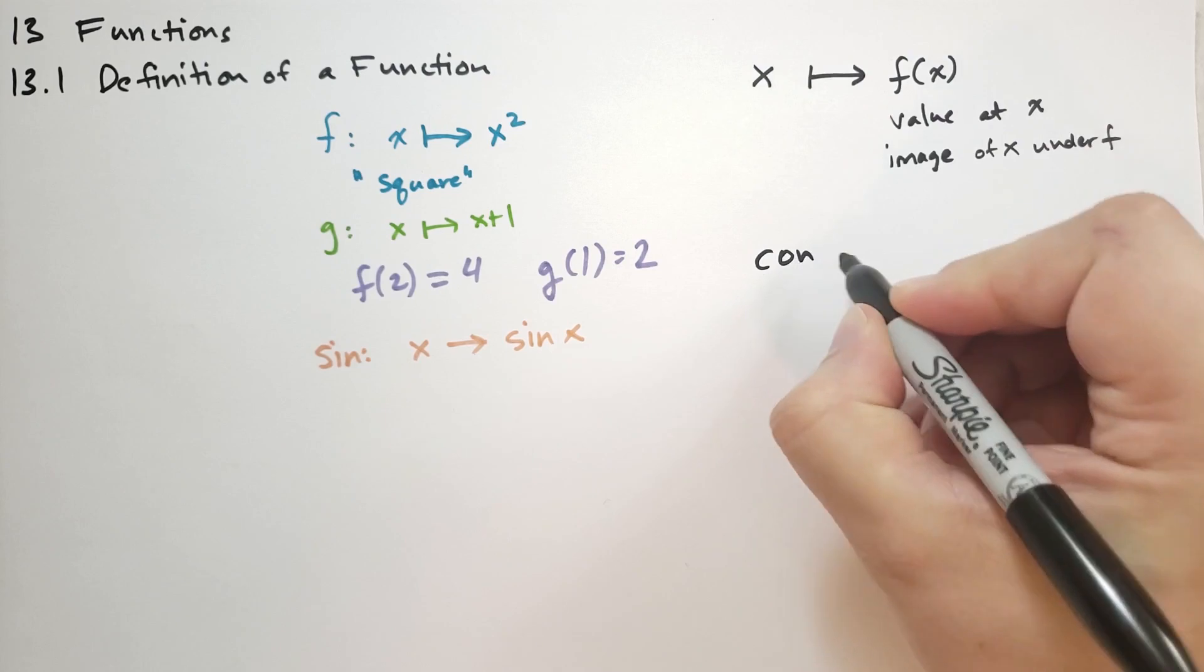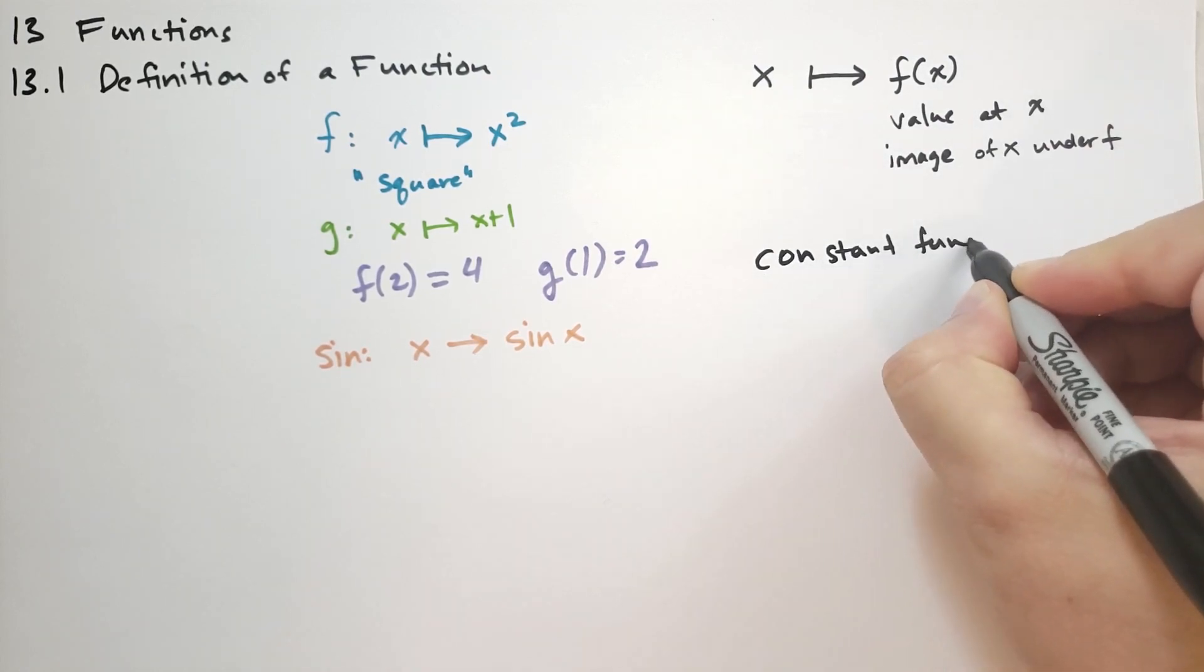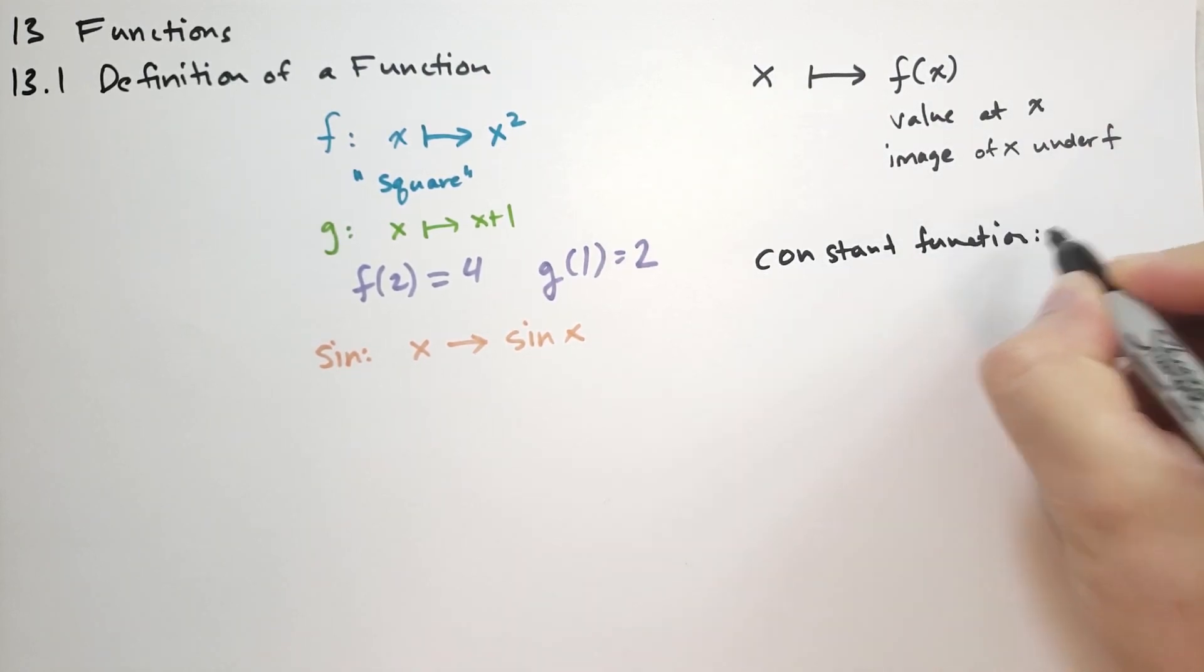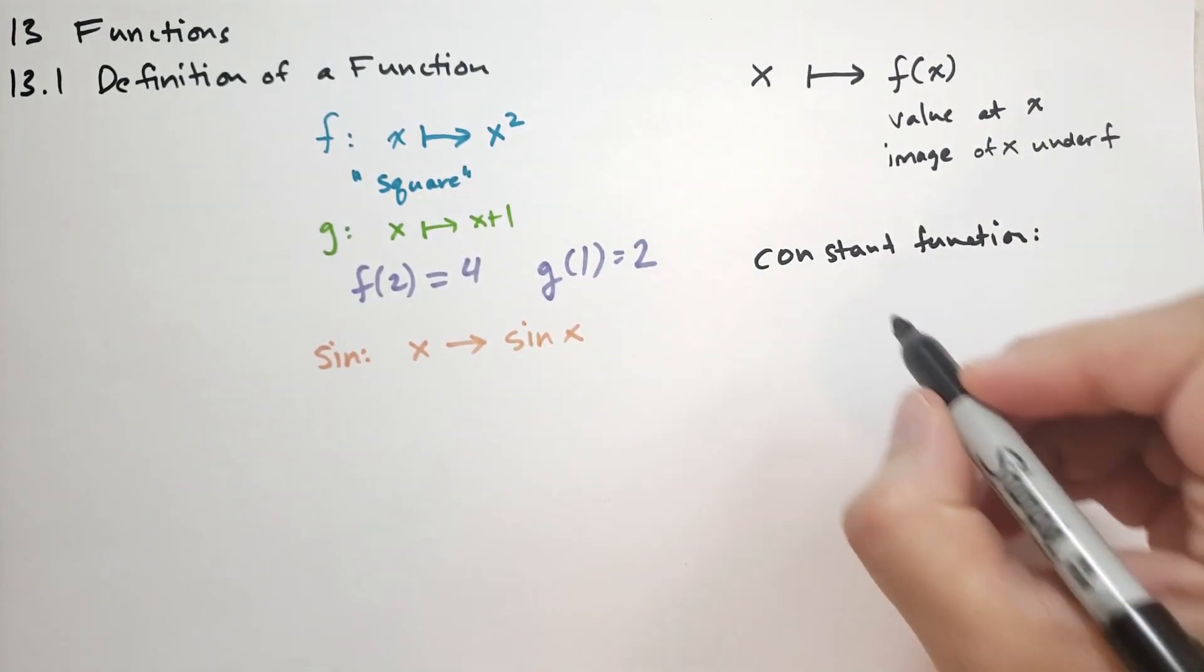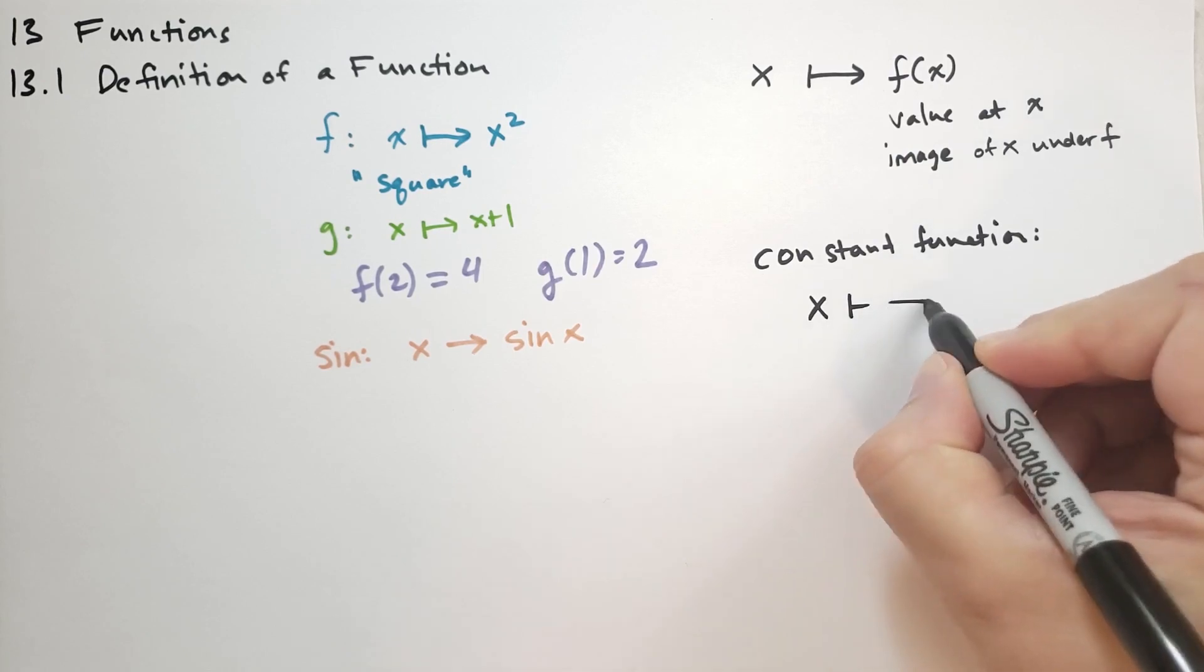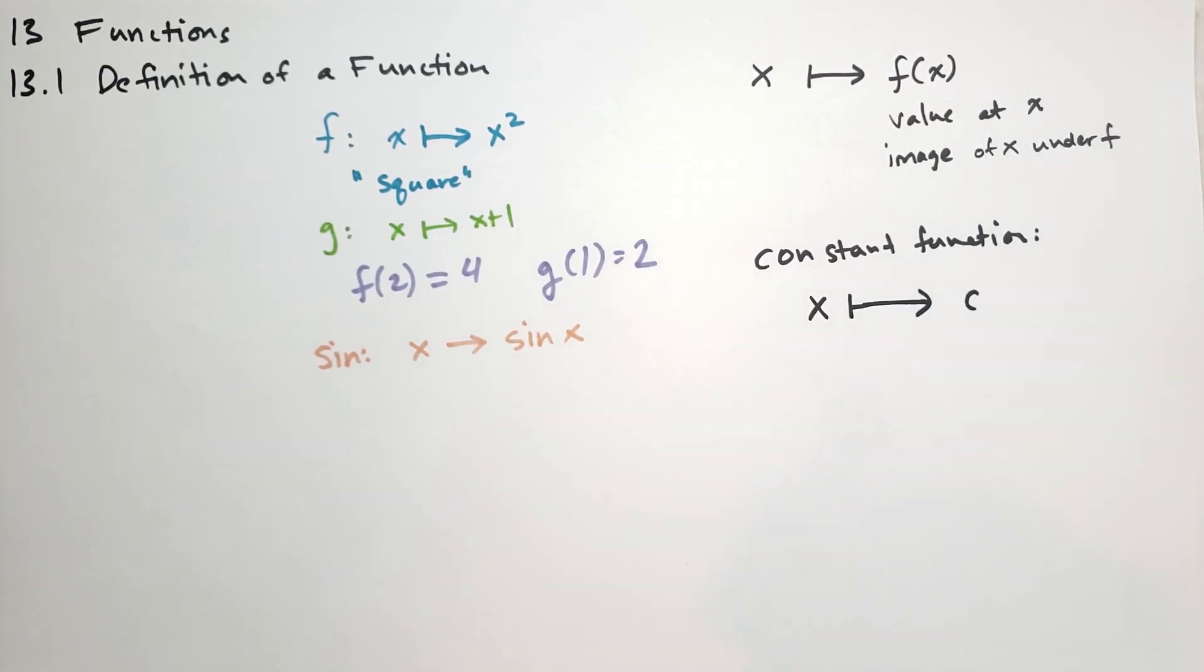There is a function that is very useful. It's called the constant function. We're going to need this when we want to do things with functions. And what a constant function does is it takes x and it maps it to some constant value c for all x. So we call this the constant function with value c.